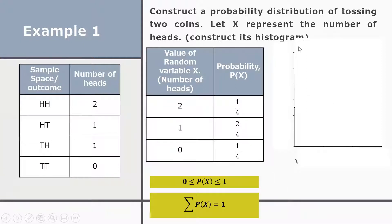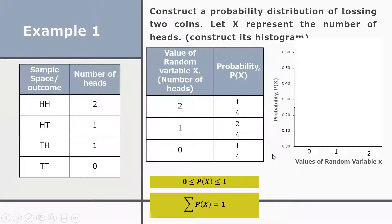We use the first quadrant of the Cartesian coordinate plane where x and y are both positive. On the x-axis, we plot the values of the random variable x: 0, 1, and 2. On the y-axis, we plot the probability of x, marking values 0, 0.1, 0.2, 0.3, 0.4, 0.5, and 0.6.